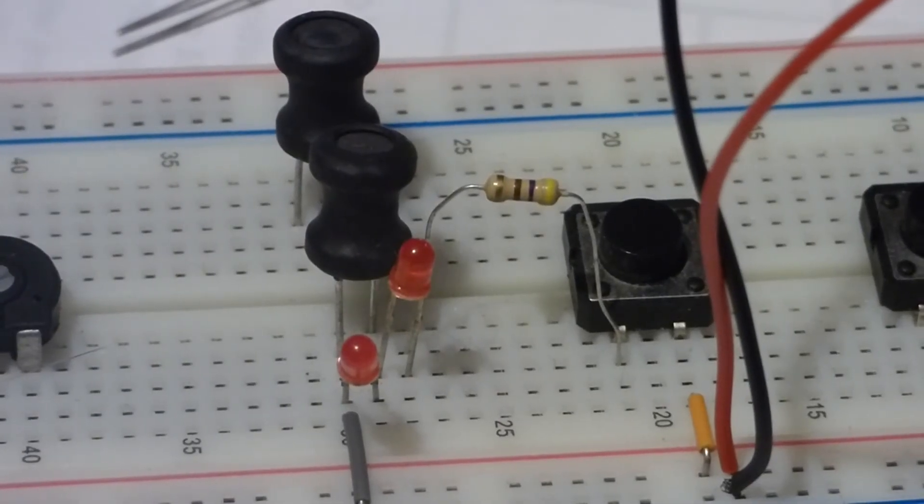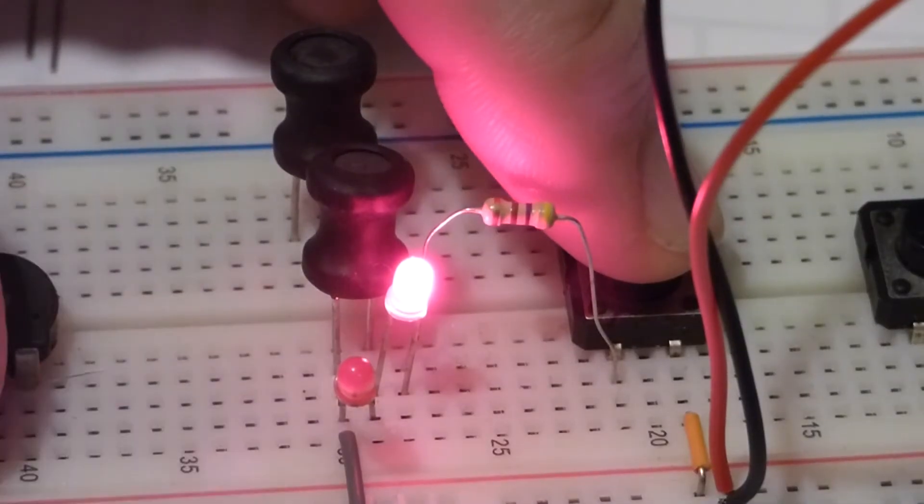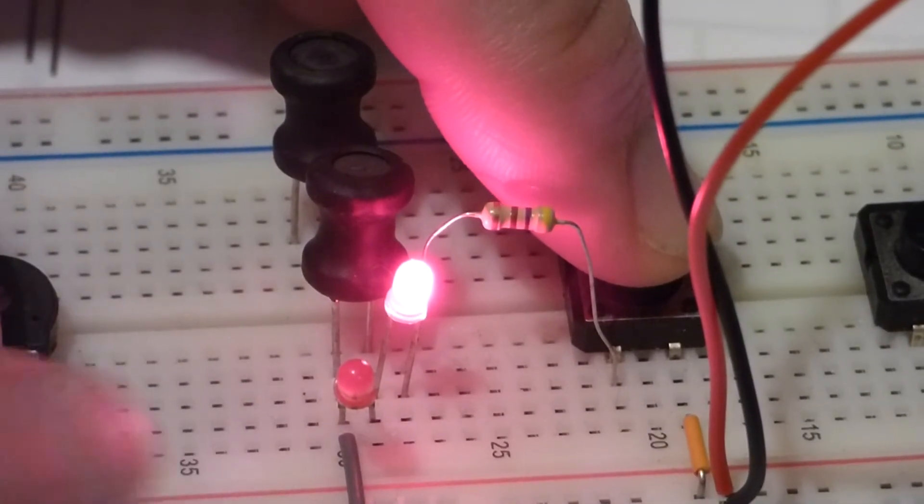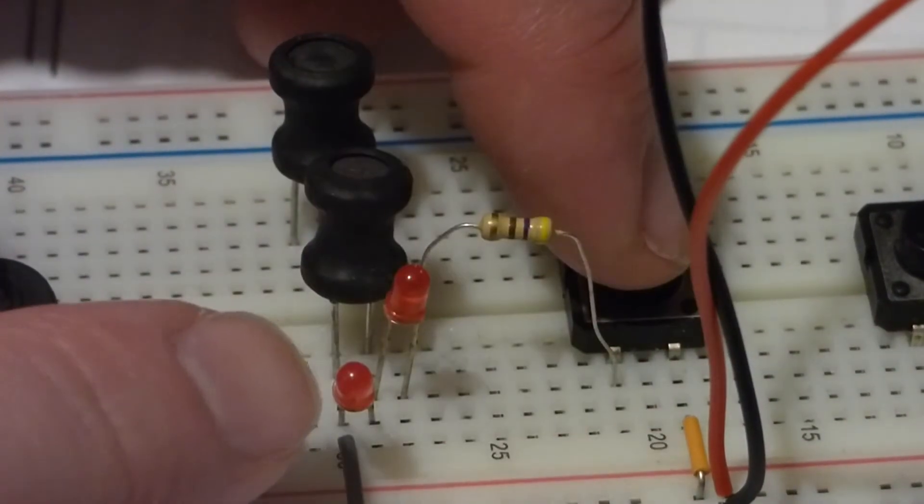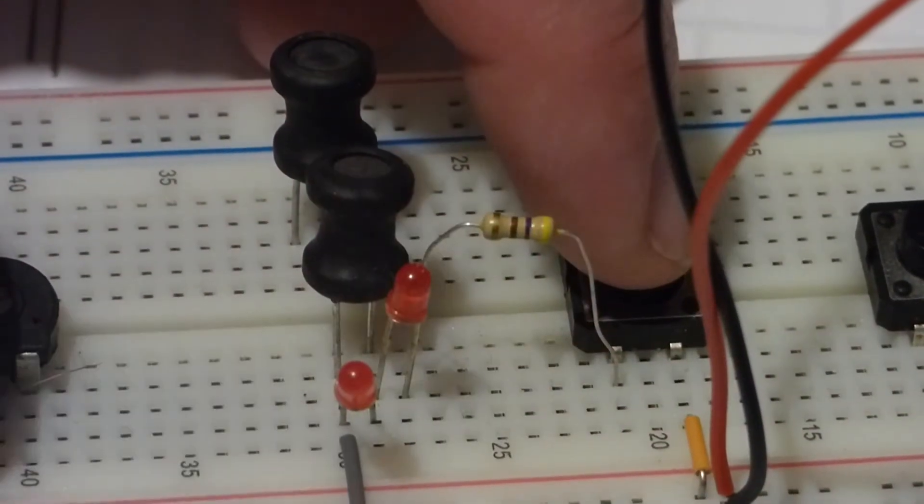It's going to be hard to really notice this, but when I hit the switch, that LED lights up. That obviously is easy to see. But when I release the switch, and even when there's some switch bounce, this other LED quickly flashes.